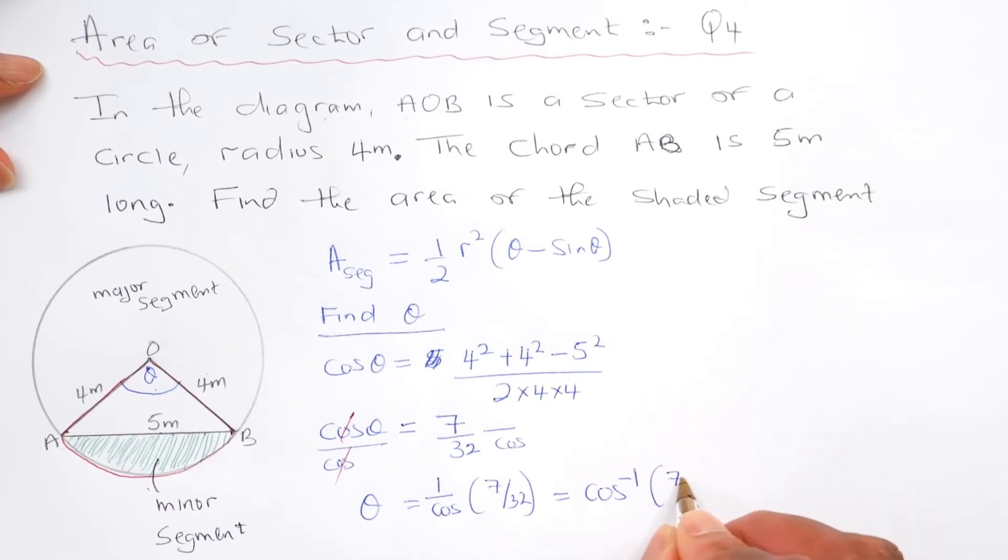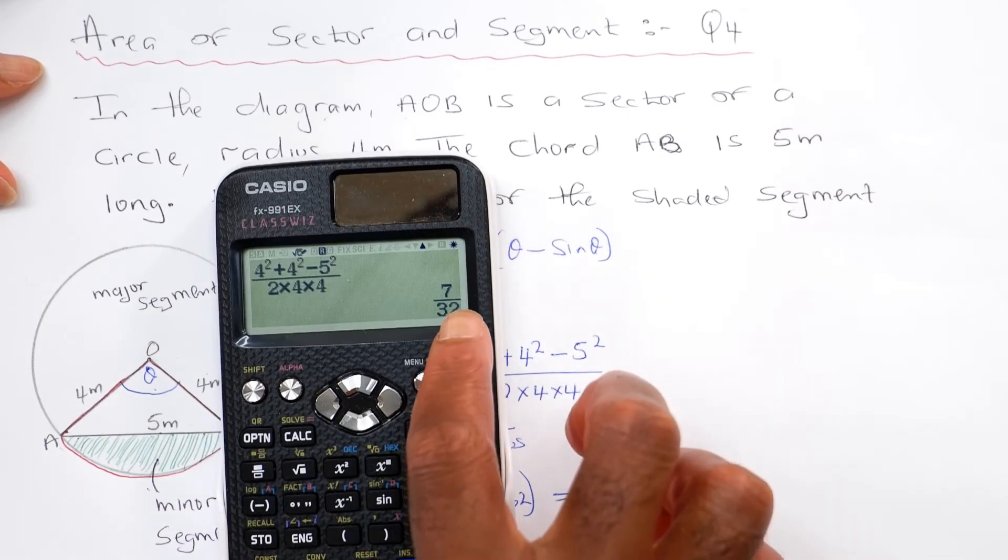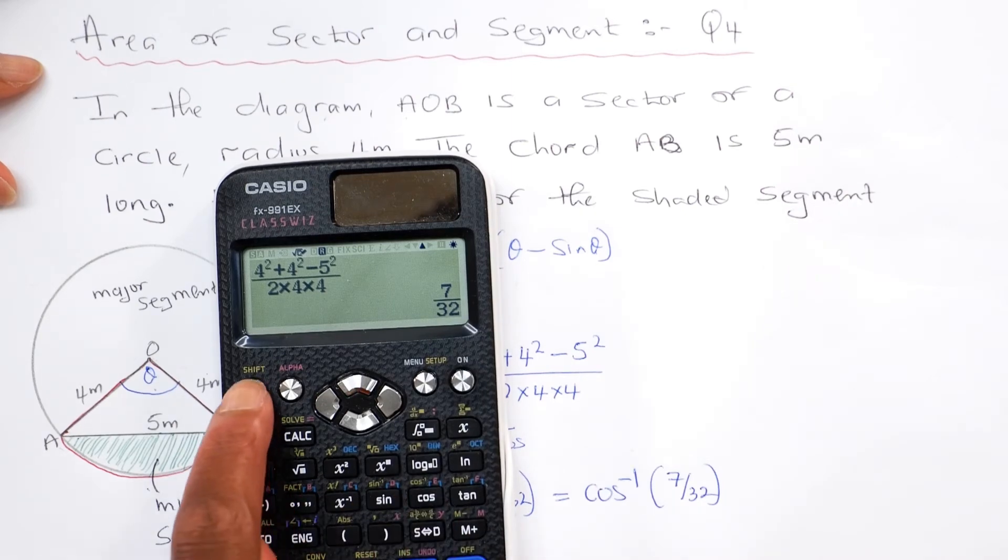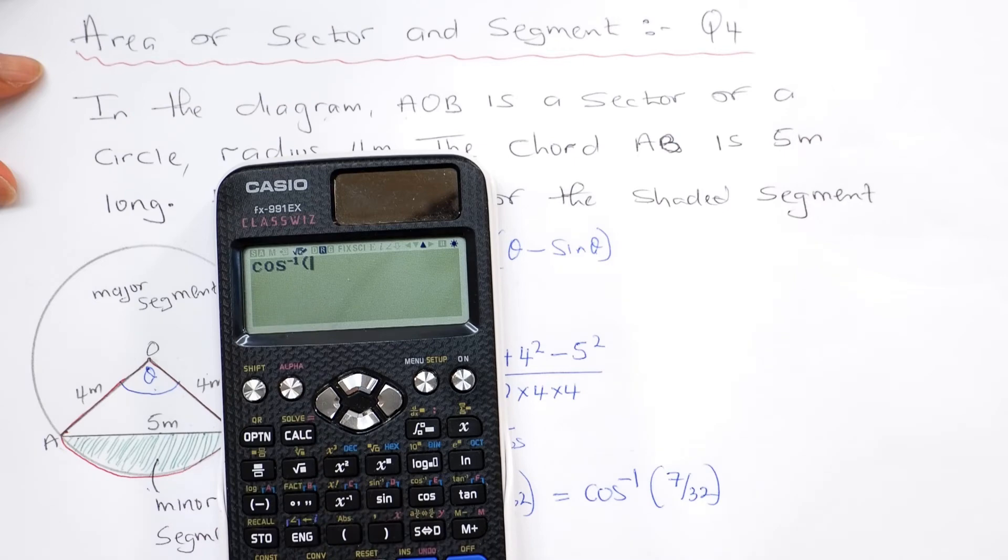Right, so at this point in time I can find that by again bringing in the calculator. So this is the answer. If I do shift cos, now given the inverse cos answer close bracket.